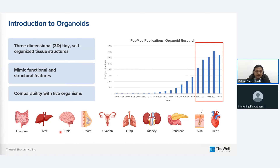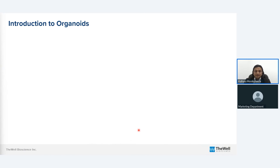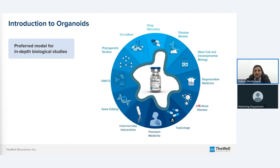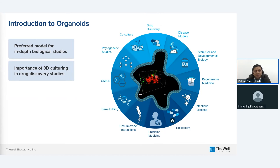Today we have several well-established organoid models from different tissues and organs, including intestine, liver, brain, and kidney. Due to these beneficial features and advancements in research, organoid cultures can be considered a preferred model for in-depth biological studies. They have many advanced applications and are ideal for disease modeling, and also very popular among research communities who conduct drug discovery and co-culture-related experiments. Here at WellBioScience, we tested the interaction of dendritic cells with human gastric organoids, and similar advanced research can be conducted using these 3D organoids.